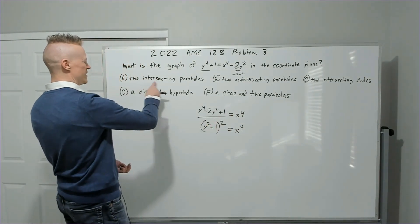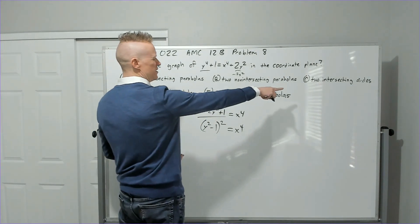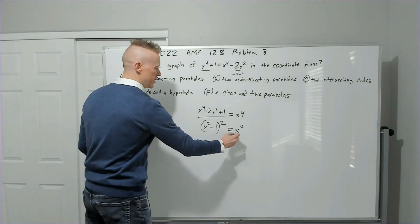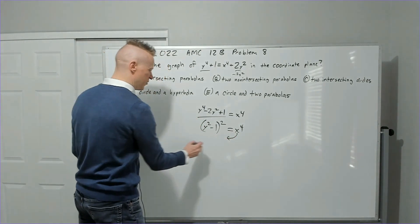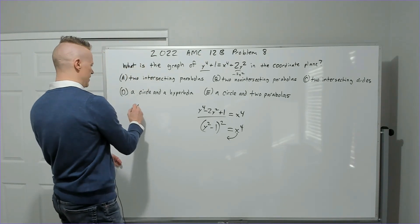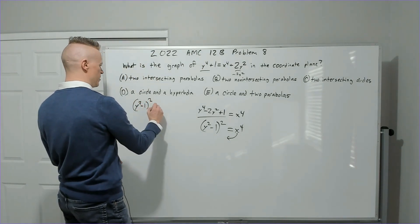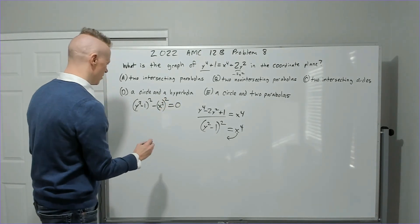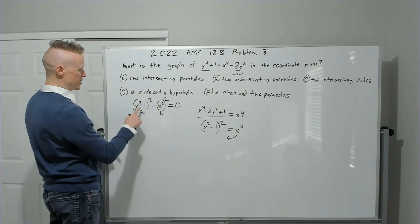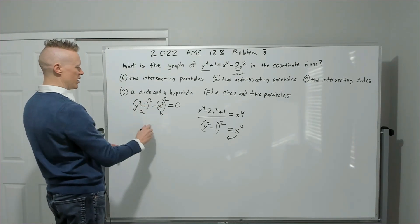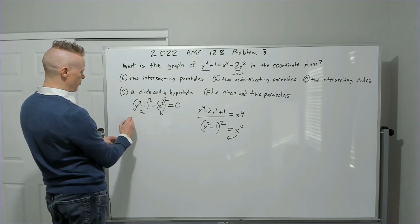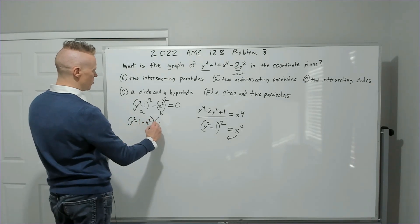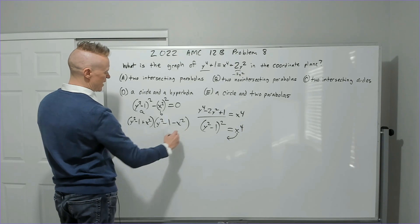x⁴ is not a parabola or circle, so let's move it over: (y² − 1)² − (x²)² = 0. This is a difference of squares — a² − b² — where a = (y² − 1) and b = x². Factoring gives (y² − 1 + x²)(y² − 1 − x²) = 0.